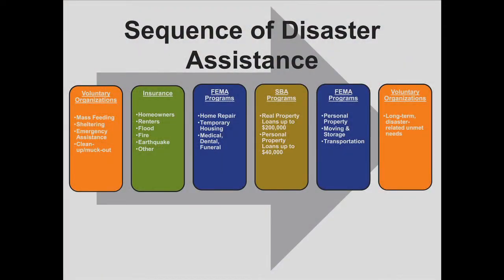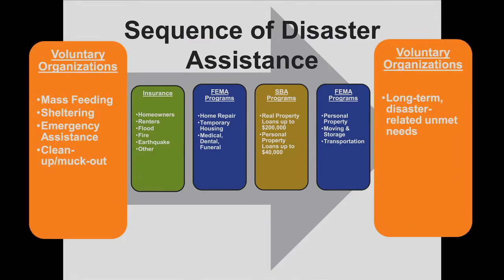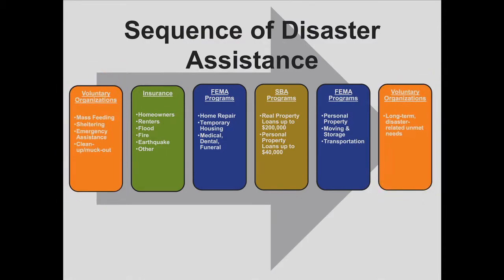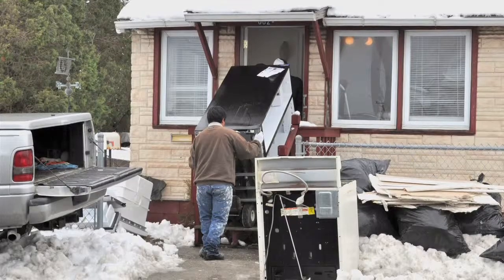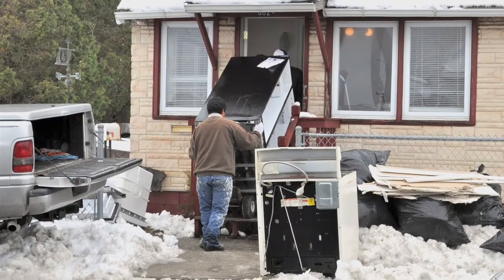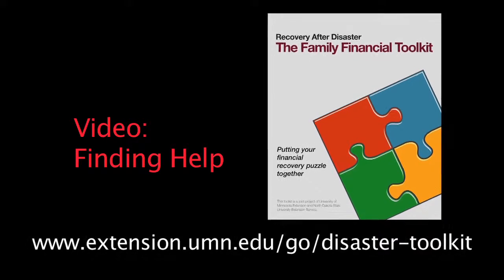As we look at the sequence of disaster assistance graphic, note that assistance from voluntary organizations is listed first and last. Assistance from a variety of volunteer groups may be available at different stages throughout recovery. Assistance may include volunteers working with you, along with donations of materials and financial assistance. The video Finding Help provides information about the types of volunteer services that may be available during disaster recovery.